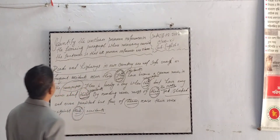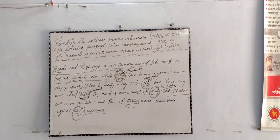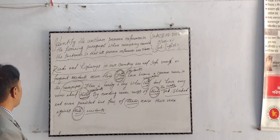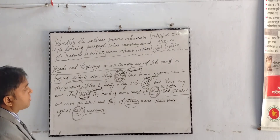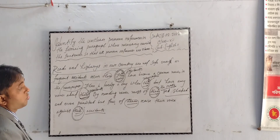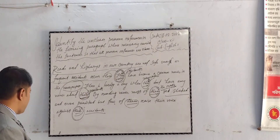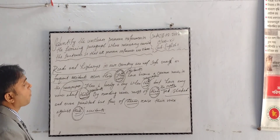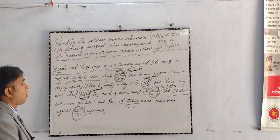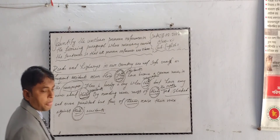So we can rewrite, replacing the five pronouns so that all pronouns are clear. Roads and highways in our country are not safe enough as frequent accidents occur here. Accidents have become common news in the newspapers. There is hardly a day when newspapers don't have any news about accidents. By reading news, most of the people get shocked and even panicked, but few of them raise their voice against accidents.